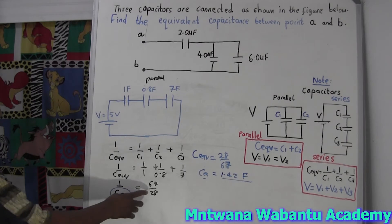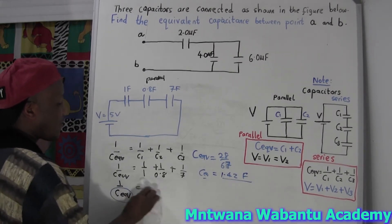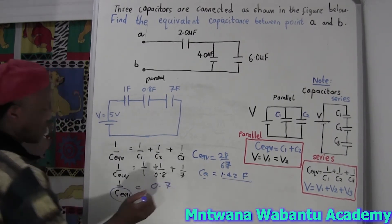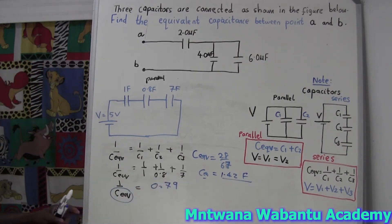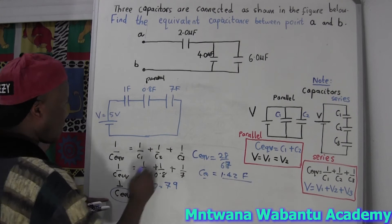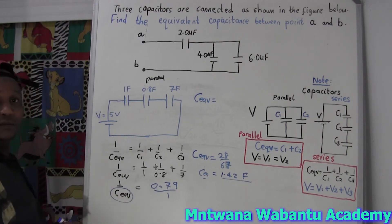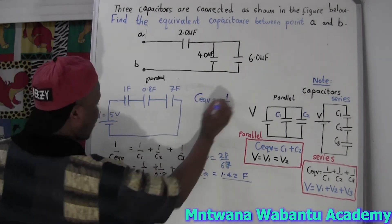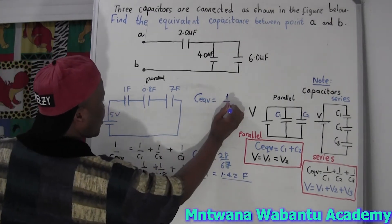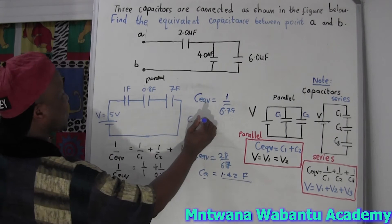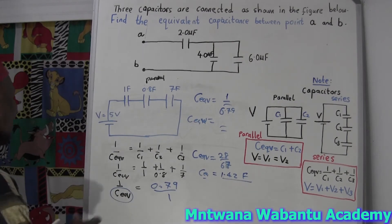Sometimes you won't always get a clean fraction from the calculator — you might get something like 0.7 or 0.49. When you need to flip it, write it as 1 over that decimal, because any number with no denominator is just over one. So C_eq = 1 over 0.79, then plug into the calculator to get your answer. Flipping is very important — and writing correctly is very important.